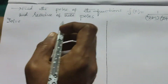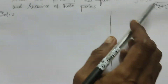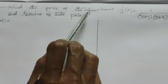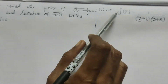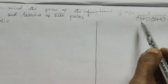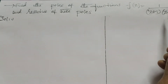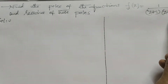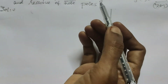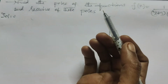Hi everyone, this is Dr. Ati. Today we are going to explain the poles of the function f(z) equals 1 divided by (z+1)(z+3), and the residue at these poles.